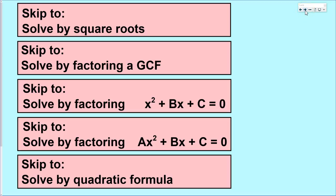If at this point you feel pretty confident on how to solve a quadratic equation using square roots, GCFs, factoring, or the quadratic formula, and you are confident on how to identify each type, you're done with the video. You can skip the rest. But if you'd like to review with examples of each type, I have about 10 or 11 examples I'm going to run through and explain. Use the annotations to skip ahead to the appropriate time marks in the video.